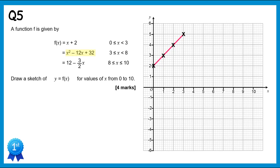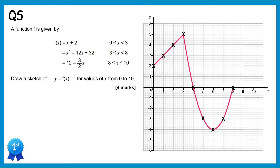Now we have the quadratic x squared minus 12x plus 32 for x values from 3 to 8. At x=3 we get 5; x=4 gives 0; x=5 gives -3; x=6 gives -4; x=7 gives -3; and x=8 gives 0. We join that up with a smooth curve and move on to the final section.